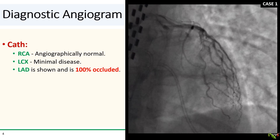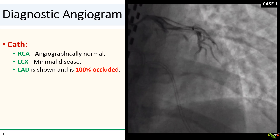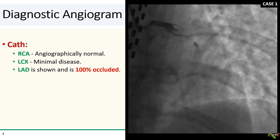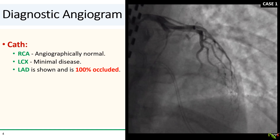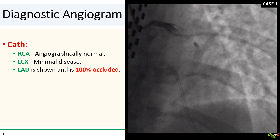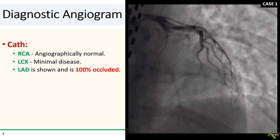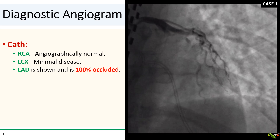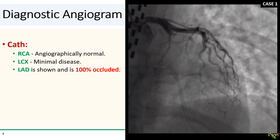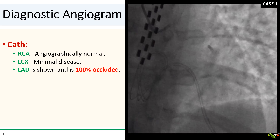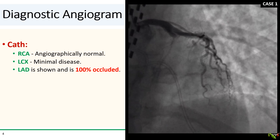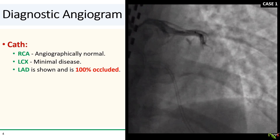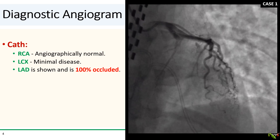On cath, the RCA and circumflex were fine, but here's the LAD, and as you can see, it is 100% occluded proximally. There is also dye staining suggesting that this is an acute thrombotic occlusion — in other words, essentially a STEMI involving the proximal LAD. Boy, are you glad you took her to the lab quickly.